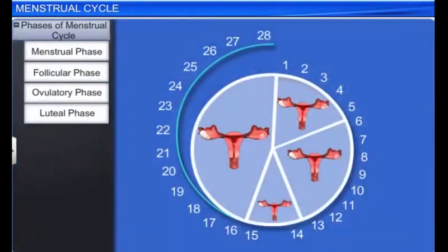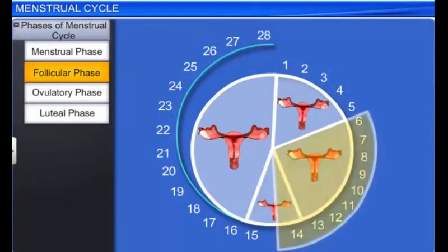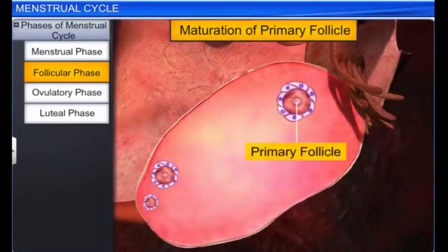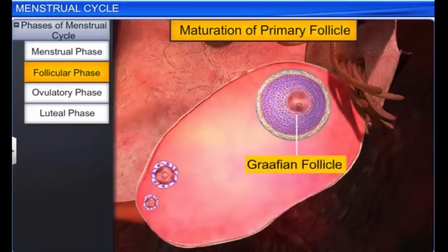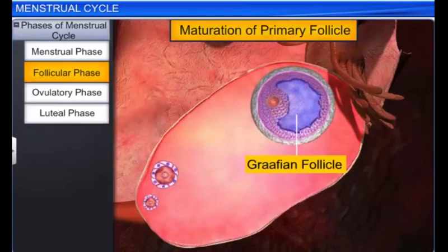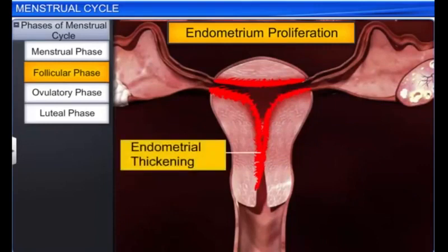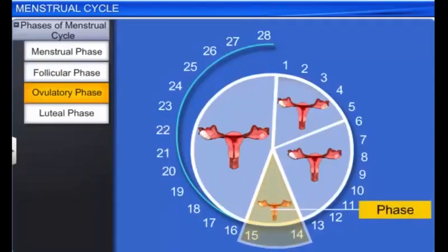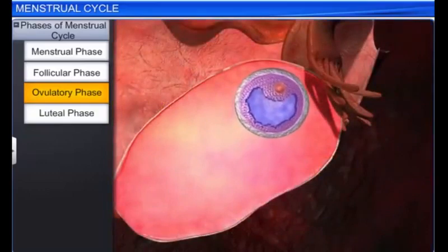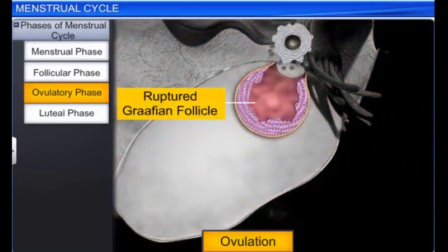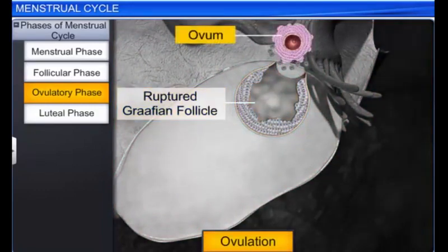The menstrual phase is followed by the follicular phase, occurring between days six and fourteen. During this phase, the primary follicle in the ovary matures into a Graafian follicle. The follicular phase is followed by the ovulatory phase in the middle of the cycle, during which the Graafian follicle ruptures to release an ovum into the pelvic cavity - a process called ovulation.